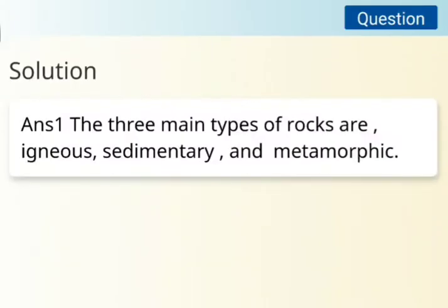The last question is: What are the three main types of rocks on earth? The answer is: The three main types of rocks are igneous rocks, sedimentary rocks, and metamorphic rocks.